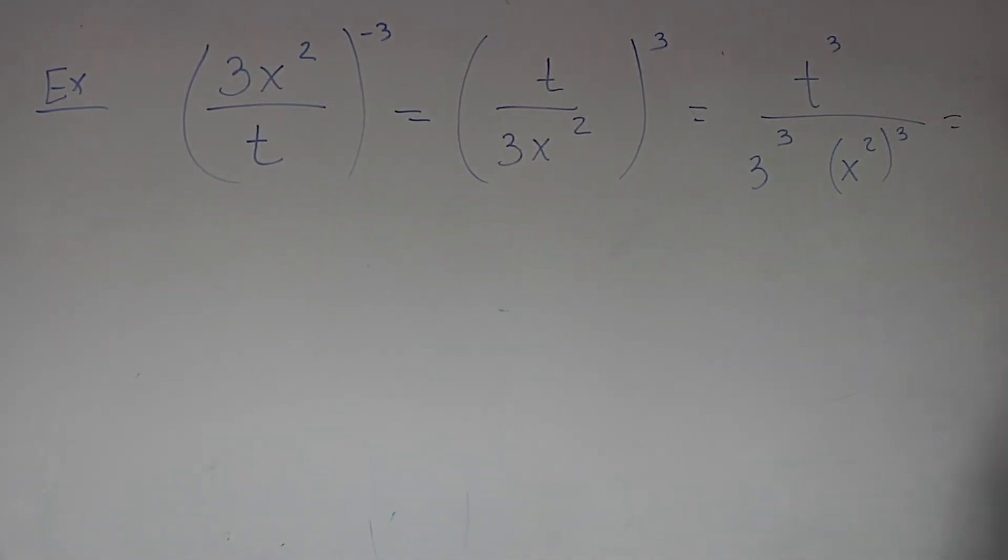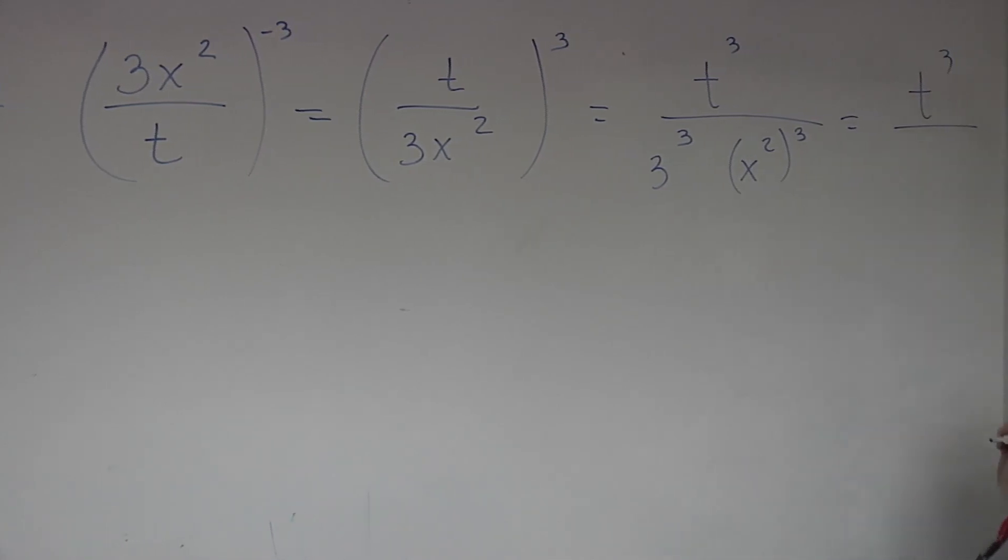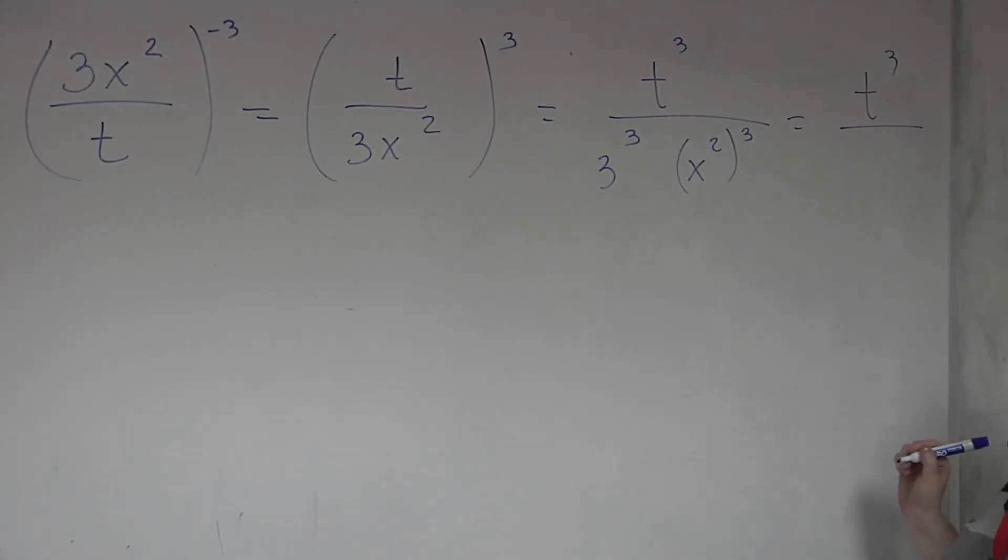All right, so simplifying, you then have t cubed. 3 to the power of 3 is 27. How many x's are you going to have now? Remember, you have 2 on the inside and 3 on the outside. You multiply the power of 3 times 6, x to the 6. There you go.